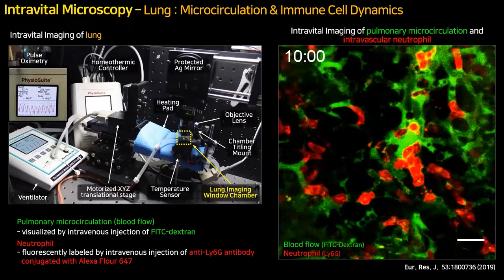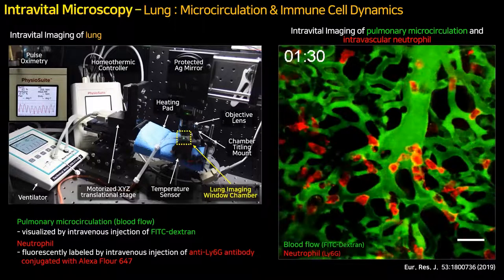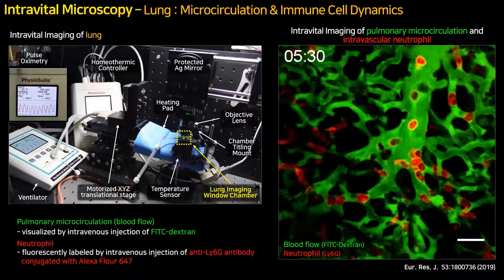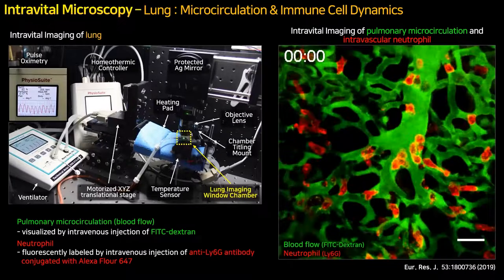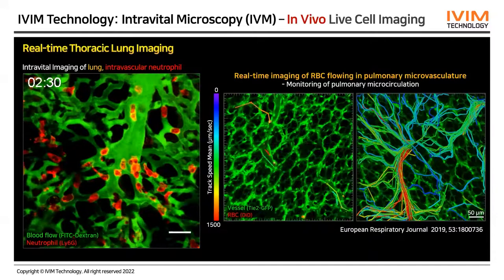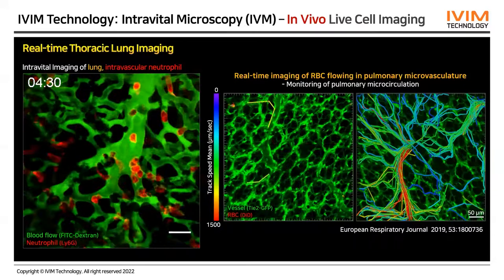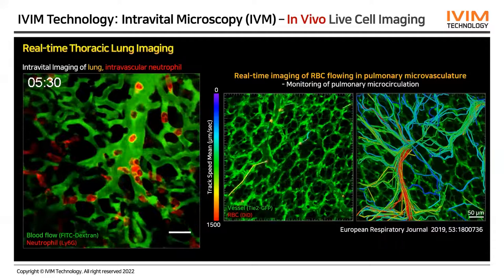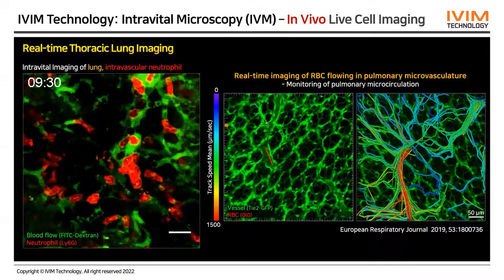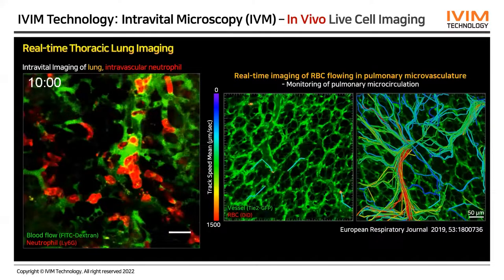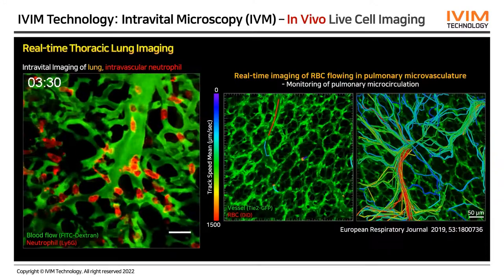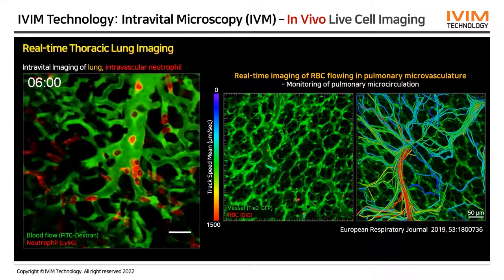Pulmonary neutrophils migrated to specific sites and blocked the micirculation of the lung blood vessels. This is an in vivo time-lapse movie of neutrophil infiltration in pulmonary microcirculation. We can also measure blood flow in a real-time movie of RBC flow, and analyze differences in vascular area-specific velocity in pulmonary microcirculation of the LPS-treated mouse model.